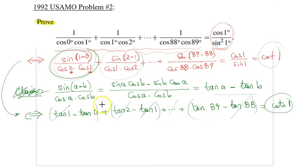The left hand side is simply equal to tangent 89 minus tangent 0. But tangent 0 is just 0, so this is tangent 89, which is the same as cotangent 1. And I'm done.